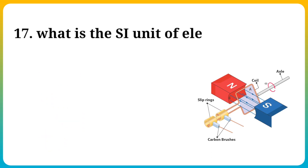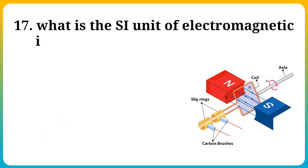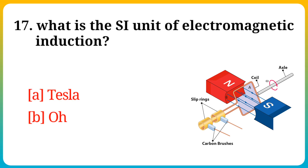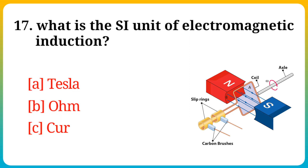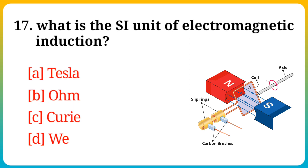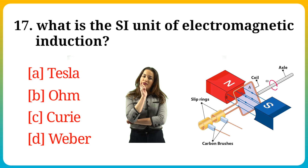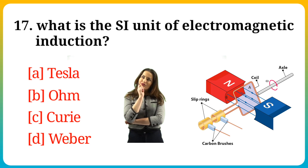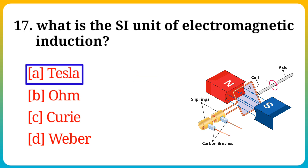Question number 17. What is the SI unit of electromagnetic induction? Option A: Tesla, B: Ohm, C: Curie, D: Weber. Answer is option A: Tesla.